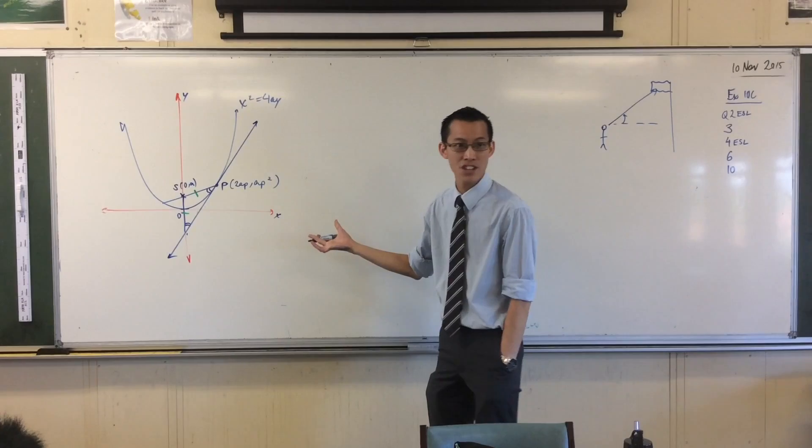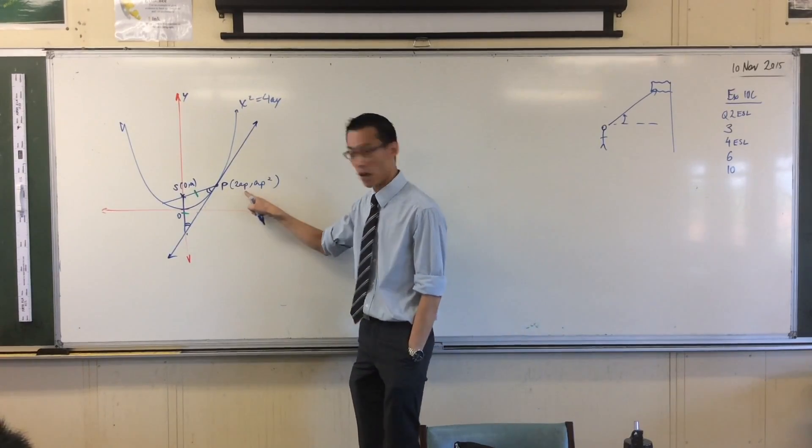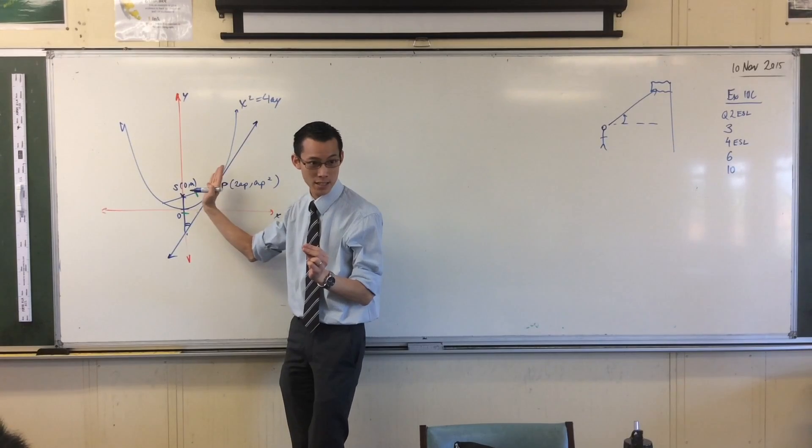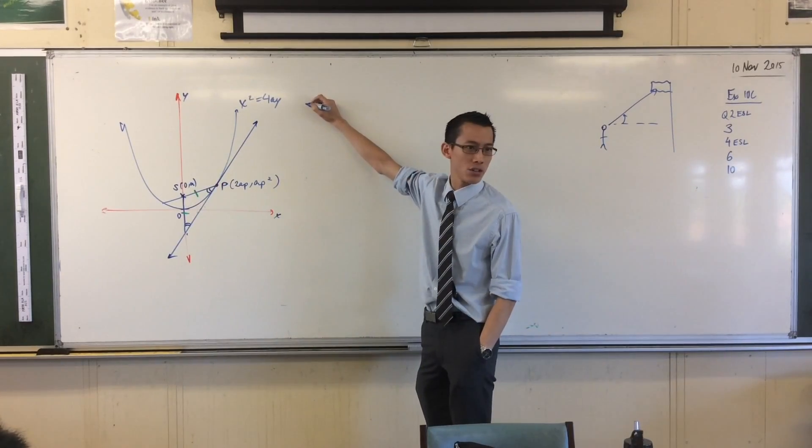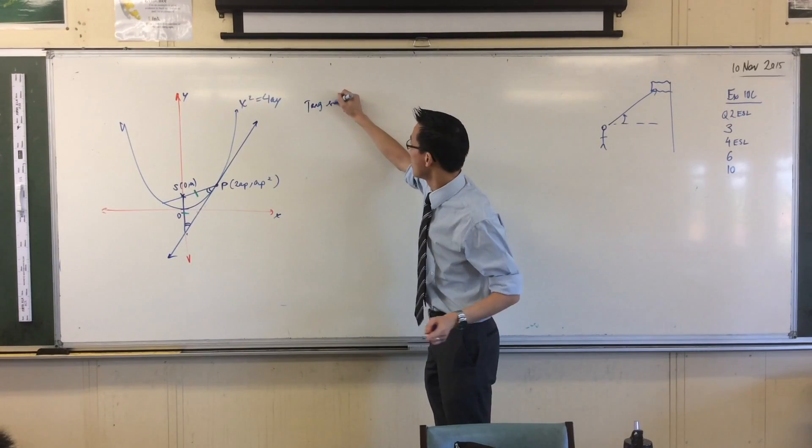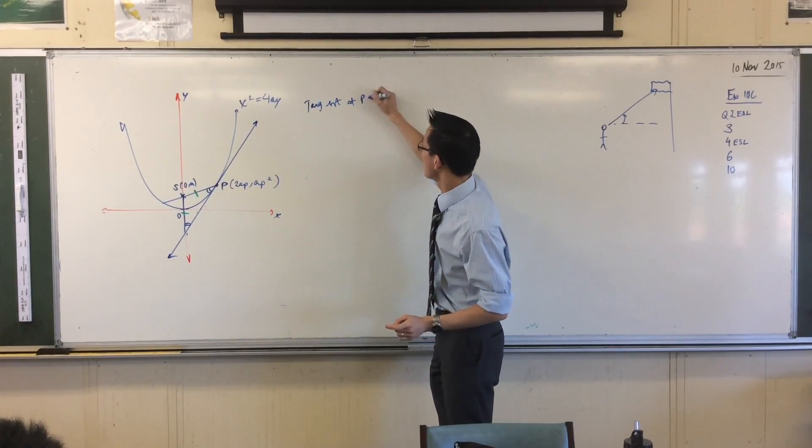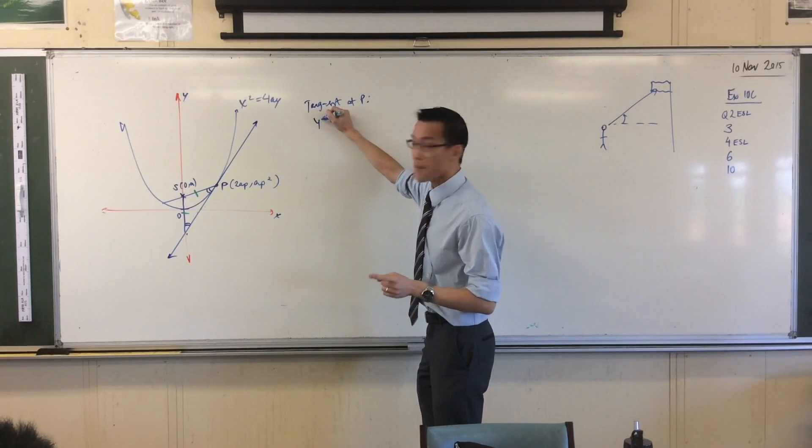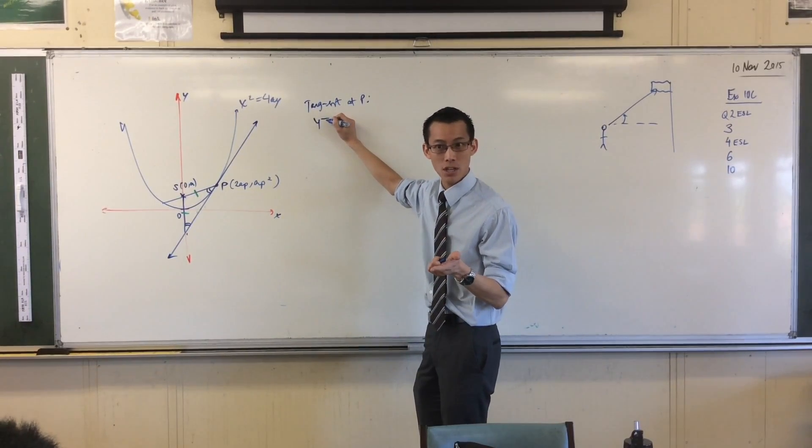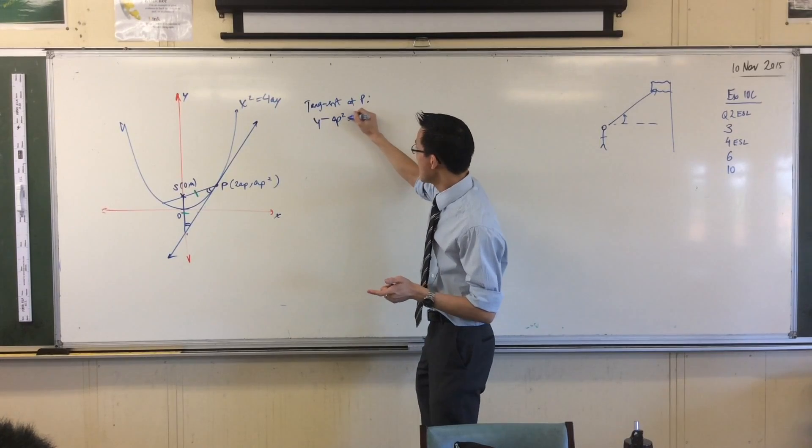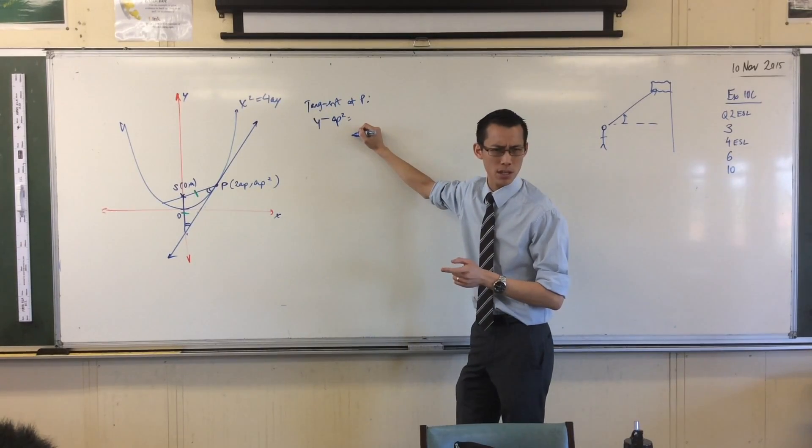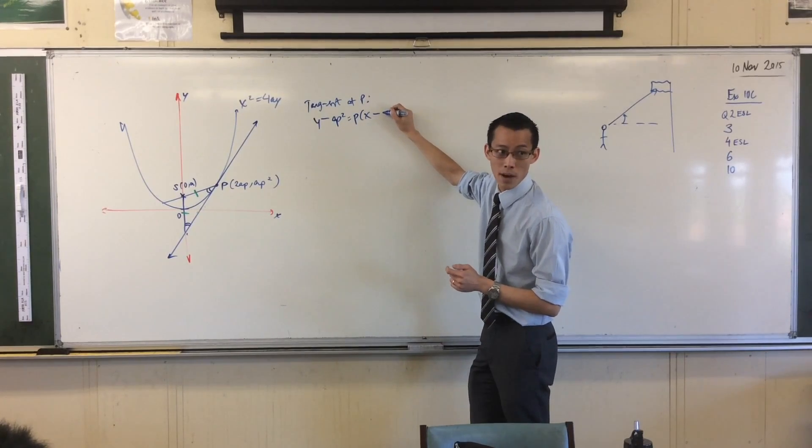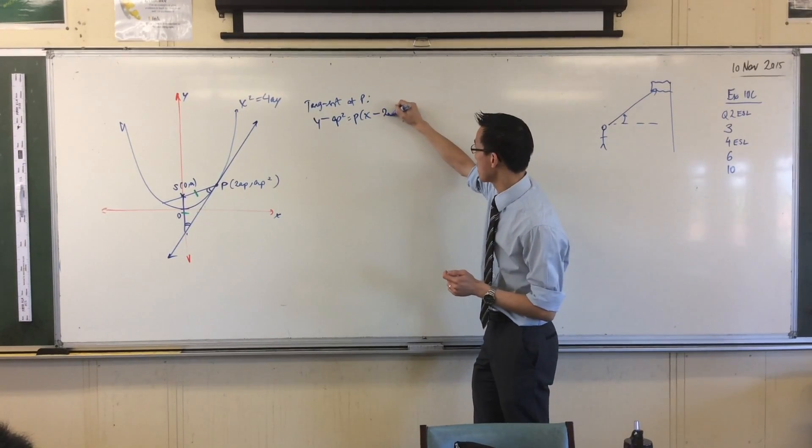You know the point it passes through by definition. You do know its gradient. So I'm going to write, what form am I going to use? Point-gradient form. So here's my tangent at P. I'm going to go y minus y1, which is ap squared, equals m, the gradient which is p, by definition, times x minus x1, which is 2ap. This is easy, we've done this a hundred times. This is y minus ap squared equals px minus 2ap squared. You see, you don't get to memorize, and that's a bit of pain, but it's there. It's very easy to work out.